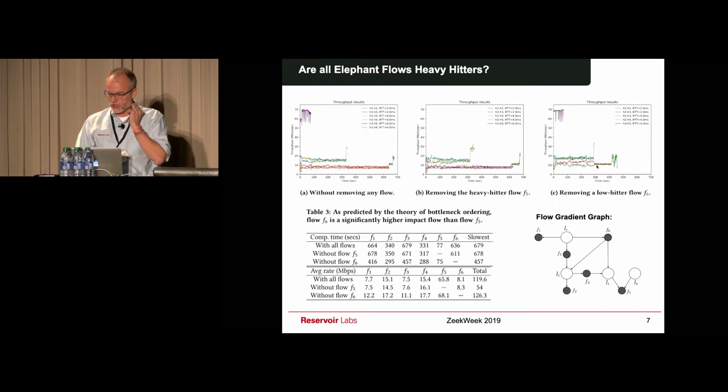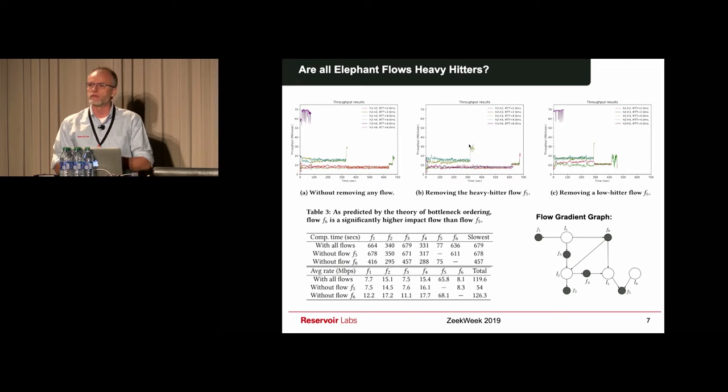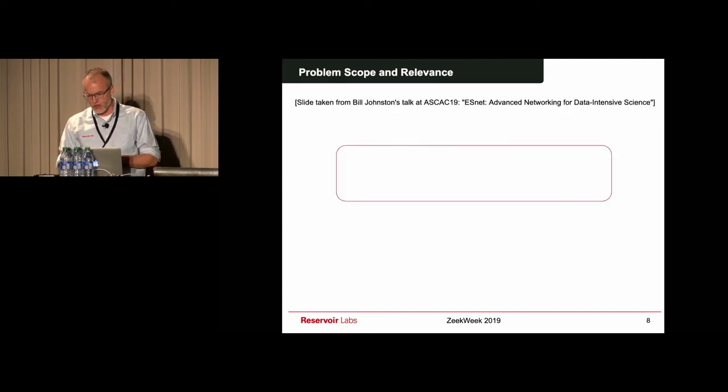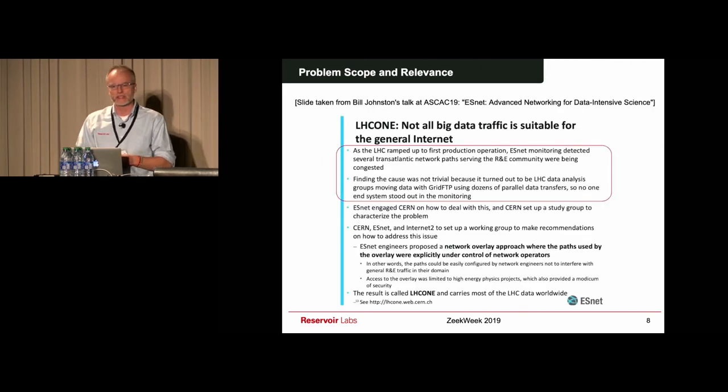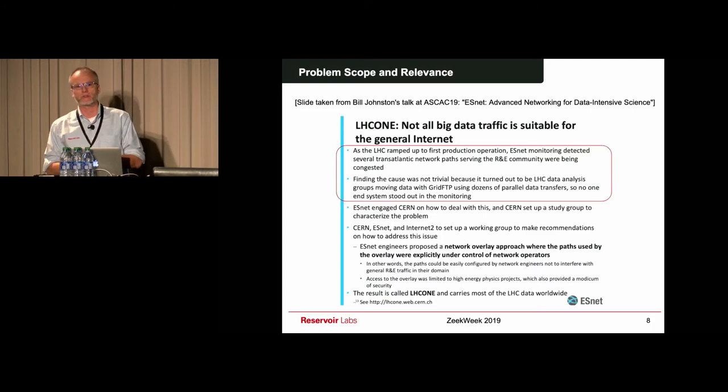That is what the mathematics of the problem predicted, that indeed the biggest flow actually has no impact. But in fact, the smallest flow is actually the one that gives you the better performance. So this is how the mathematics work. And the grading graph analytics actually built on top of this to make smarter decisions in terms of traffic engineering.